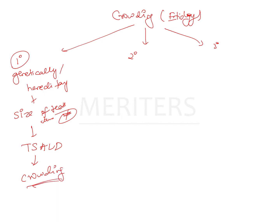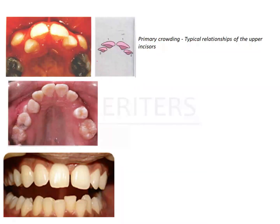A characteristic feature seen in primary crowding is a staggered position of the upper incisors. This staggered position of the upper incisors is a very characteristic feature.